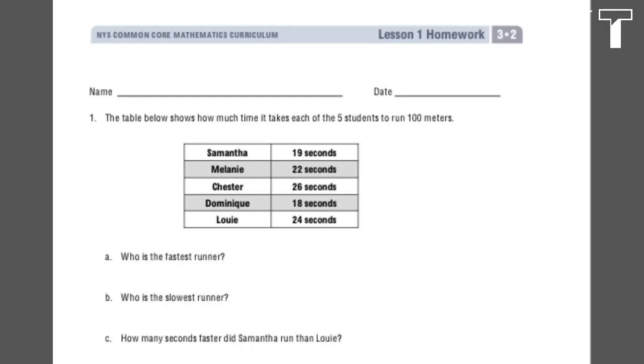This is Grade 3, Module 2, Lesson 1 Homework. Number 1. The table below shows how much time it takes each of the 5 students to run 100 meters.